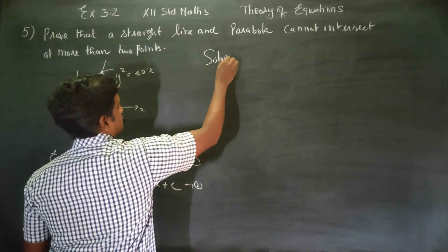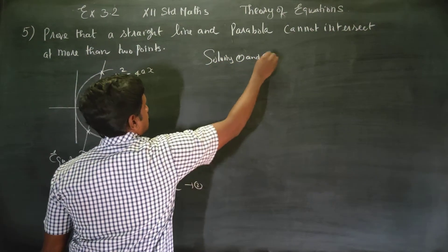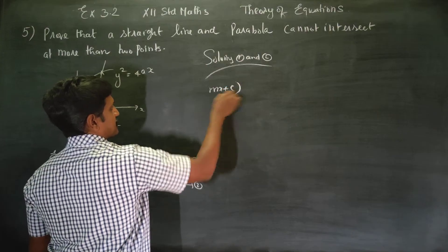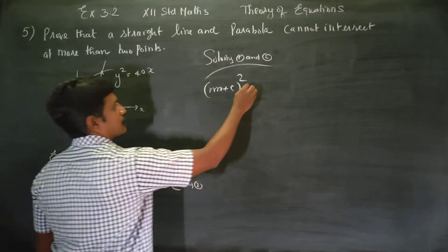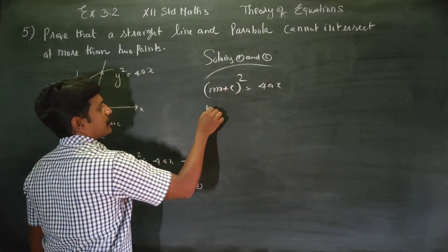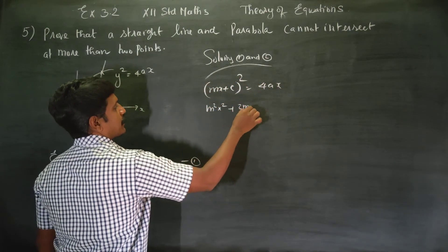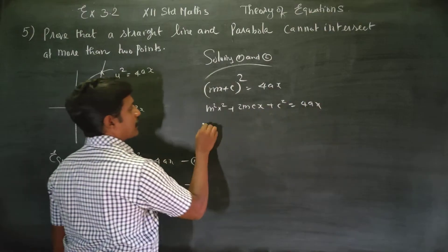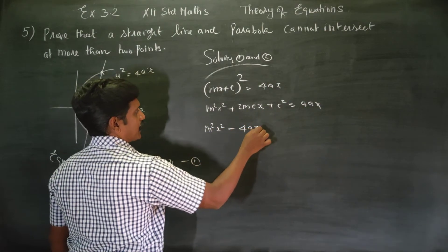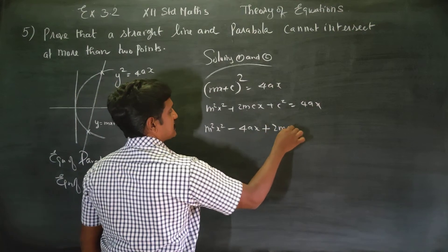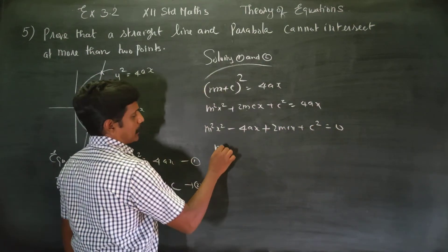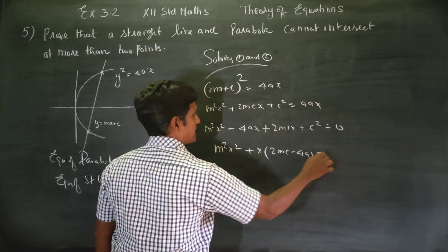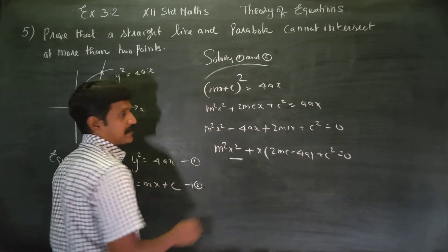Solving equations 1 and 2 by substituting equation 2 into equation 1. Replacing y with (mx + c), we get: (mx + c) all squared is equal to 4ax. Expanding: m squared x squared plus 2mcx plus c squared is equal to 4ax. This is a quadratic equation.